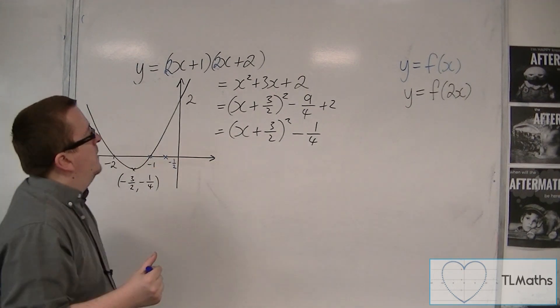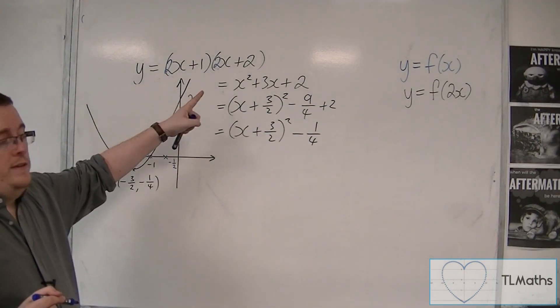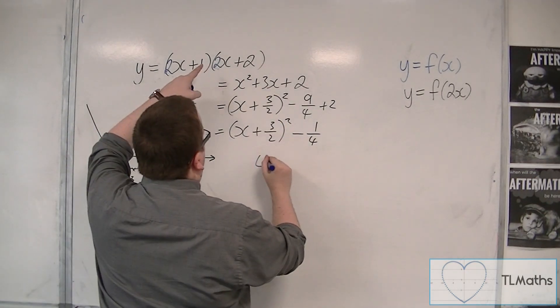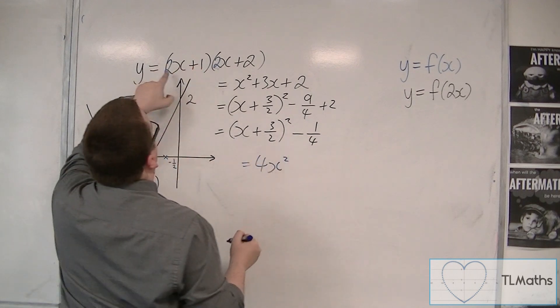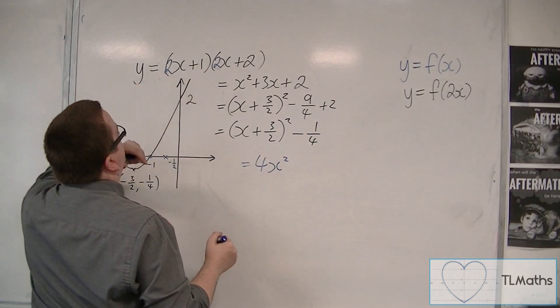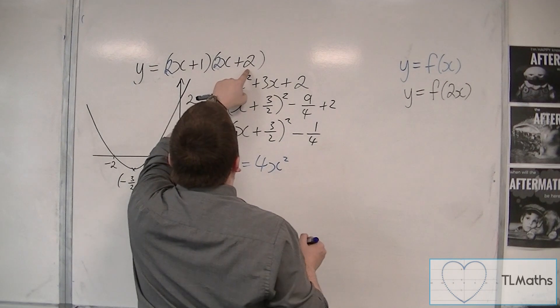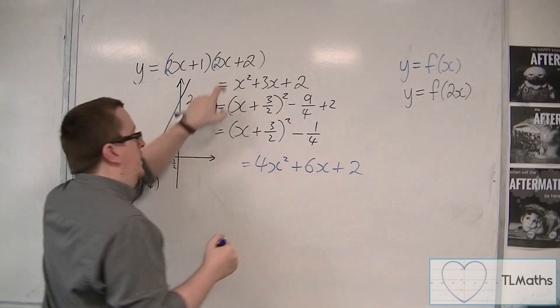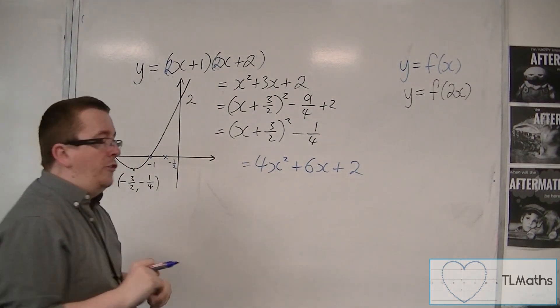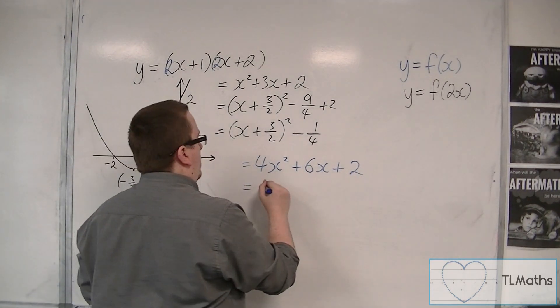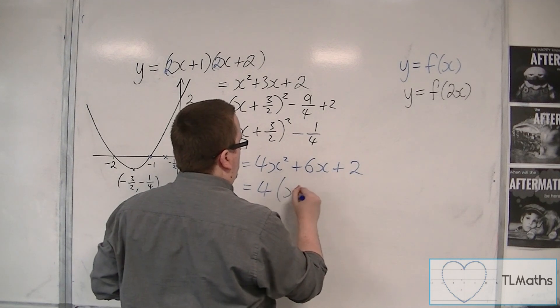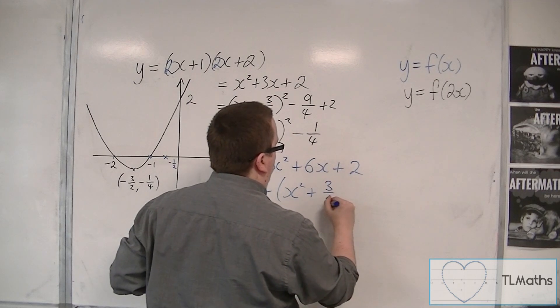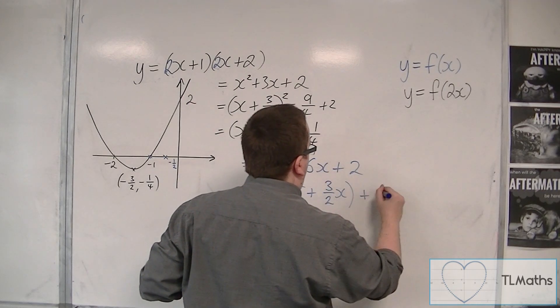Now when I expand the bracket out, what I'm going to get is 4x squared. I'm also going to get 2x times 2, so 4x plus 2x, so 6x, and I'm going to get a plus 2. So now if I complete the square on that, I'm going to take the 4 out of the first two terms, so x squared plus 6 over 4, so 3 halves x, plus 2.